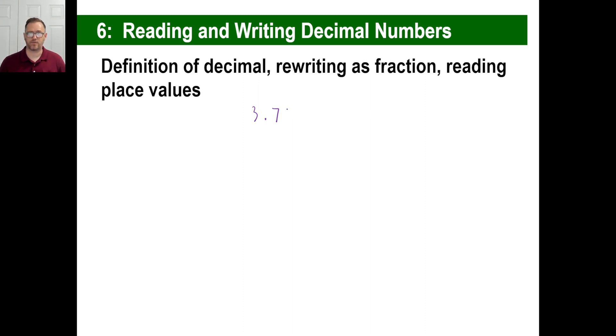Now we all read this 3.7, but we can also read this 3 and 7 tenths. If somebody were to read this, it'd be 3 and 72 hundredths. This one would be 3 and 725 thousandths. You could just keep going. Each time you just multiply it by 10. Like this would be 3 and 7,256 ten-thousandths with a THS at the very end. So that's how you read place value.